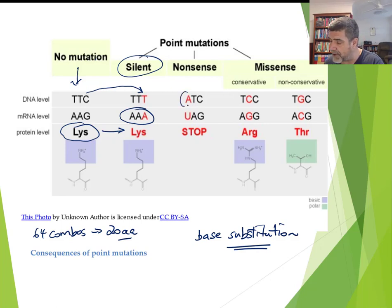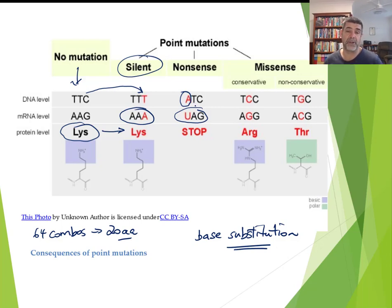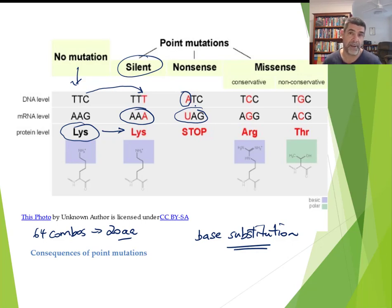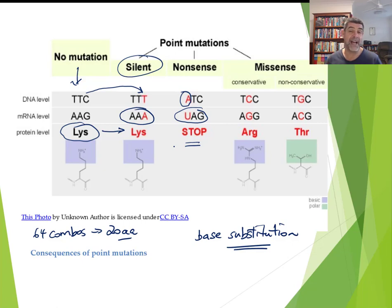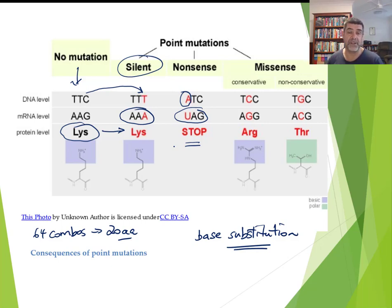If the base substitution occurs for the first T and that gets changed to an A, what you now have is a stop codon. This is a big problem, because wherever this occurs in the production of the polypeptide, that amino acid chain is going to stop right at that place. This is likely to result in a non-functioning protein. We call this a nonsense mutation — the amino acid chain reaches this artificial stop point, and any additional coding beyond that point is just ignored.